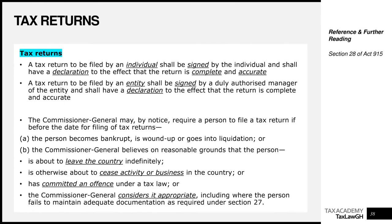Let's talk about tax returns. A tax return to be filed by an individual shall be signed by that individual and shall have a declaration to the effect that the return is complete and accurate. On every return, there is a section at the bottom where you are required to declare that whatever you've disclosed and imprinted on the return is accurate to the very best of your knowledge.